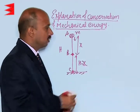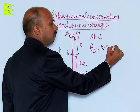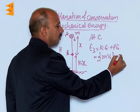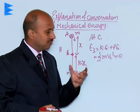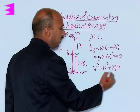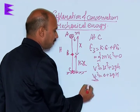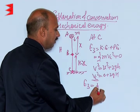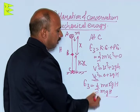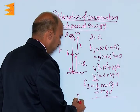Now we find total energy at C. E3 equals kinetic energy plus potential energy. At C, potential energy is 0 because height is reduced to 0 — the body has reached the ground. Applying the same formula, v_c squared equals 0 plus 2gh. So E3 equals half m times 2gh, which gives E3 equals mgh.